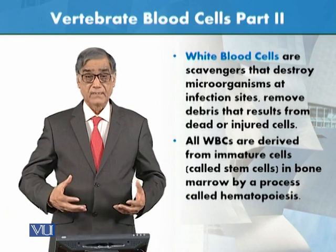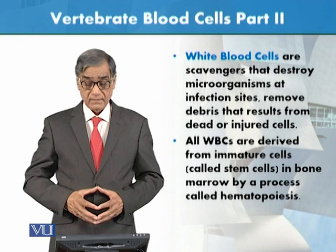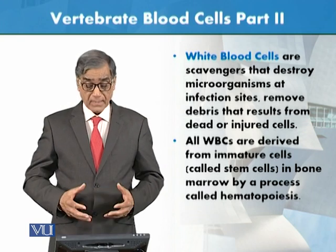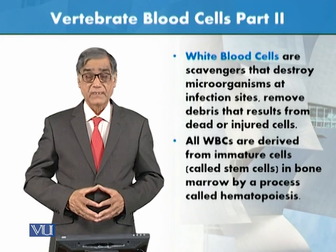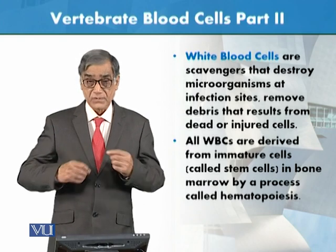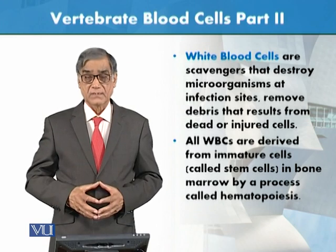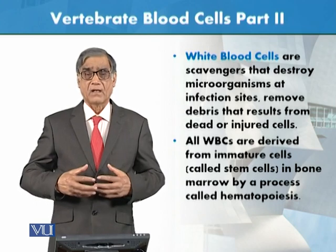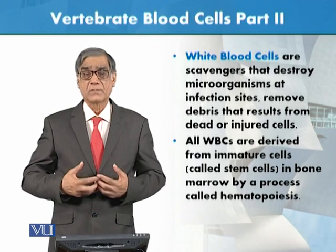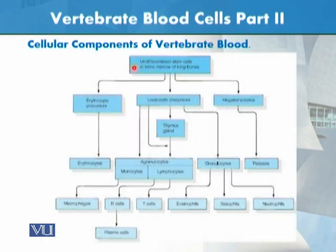All WBCs are derived from immature cells called stem cells in the bone marrow, by a process called hematopoiesis — this is the process of blood formation. It is a very complicated process that occurs inside the bone marrow, where RBCs, WBCs, and platelets are all produced. Let us briefly look at this in the diagram.